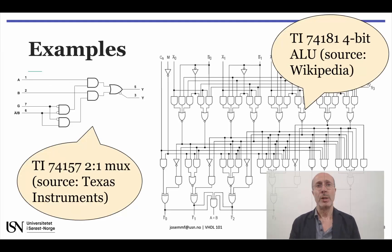This slide shows two off-the-shelf combinational circuit examples from Texas Instruments. On the left, a very simple 2-to-1 multiplexer, and on the right, a historically important circuit, the first complete ALU in a single chip, which is able to perform 16 arithmetic and 16 logic operations on 4-bit operands.